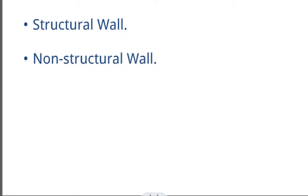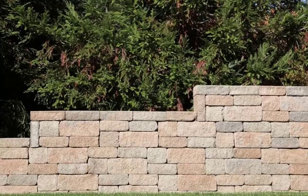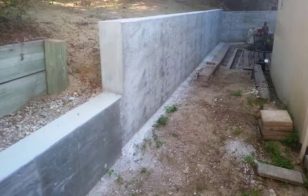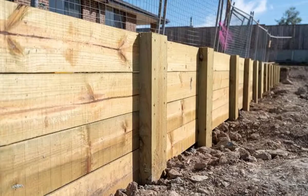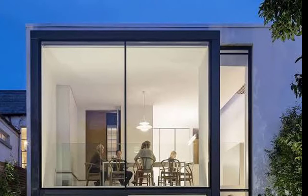A wall is said to be structural if it is built with stone, block, brick, concrete, RCC, timber or steel — that is a structural wall. Then if a wall is built with glass, it is termed a non-structural wall, or any form of non-structural material apart from glass.